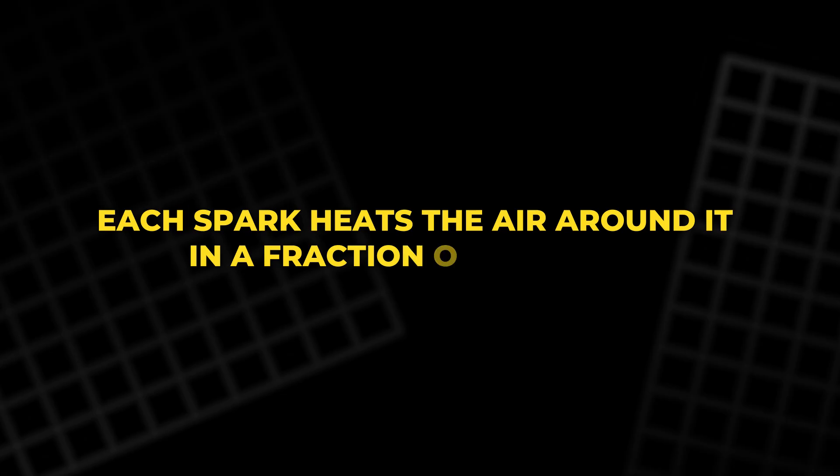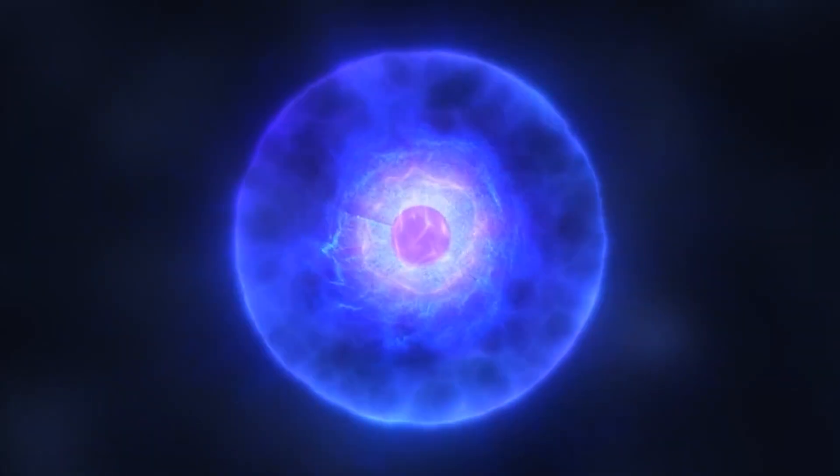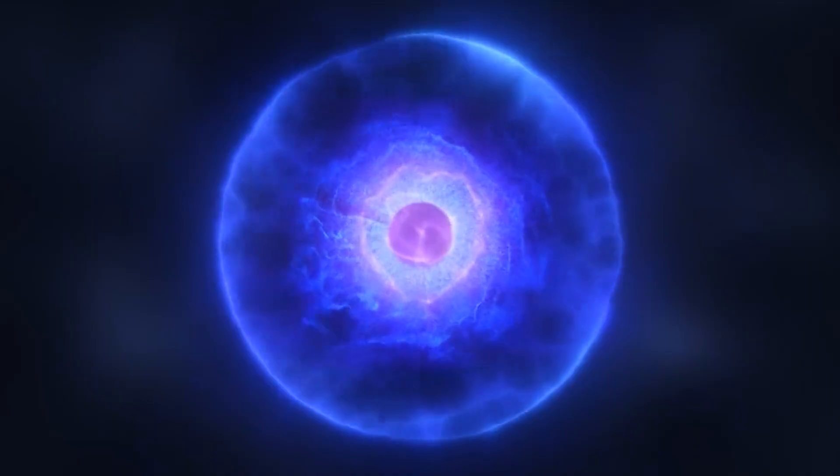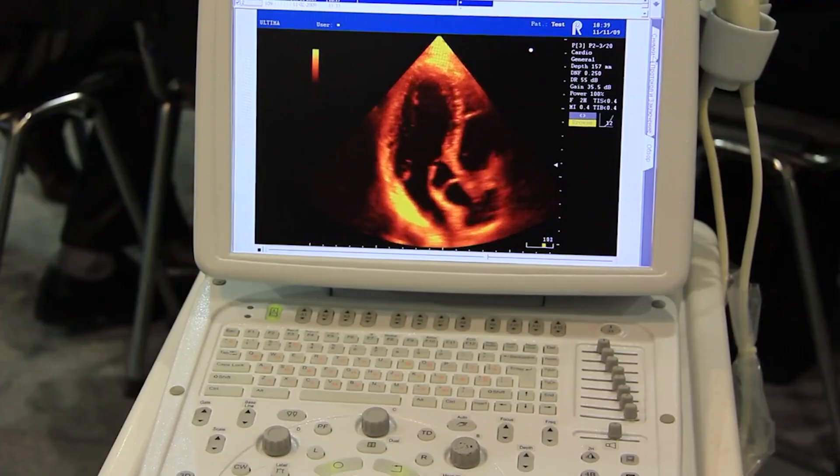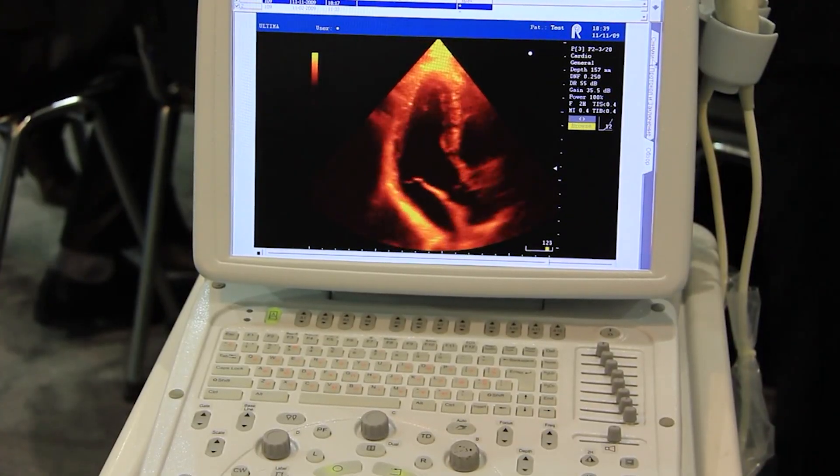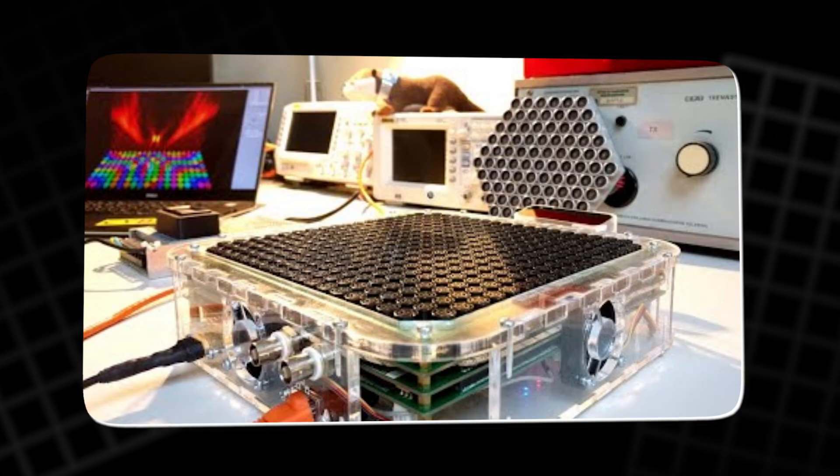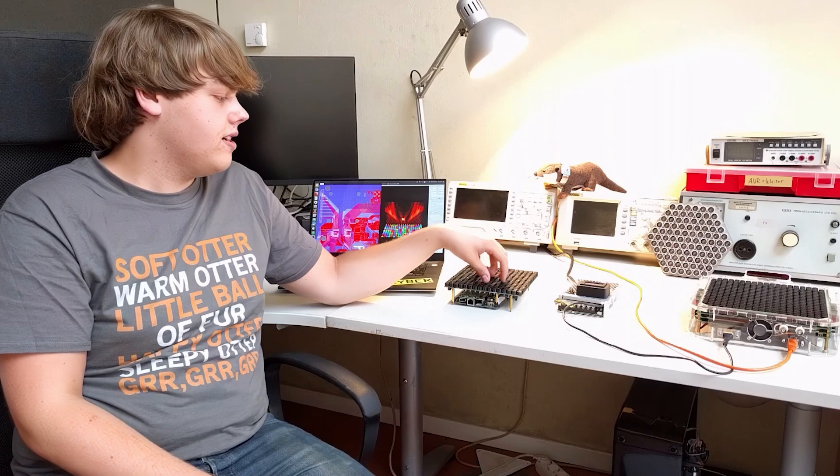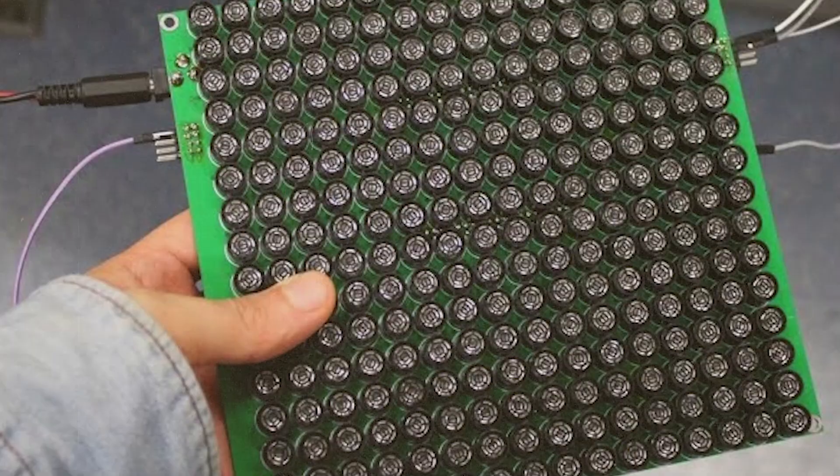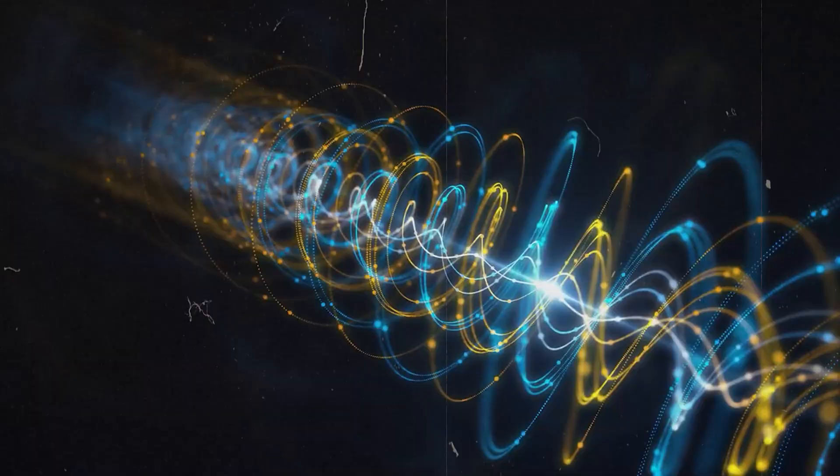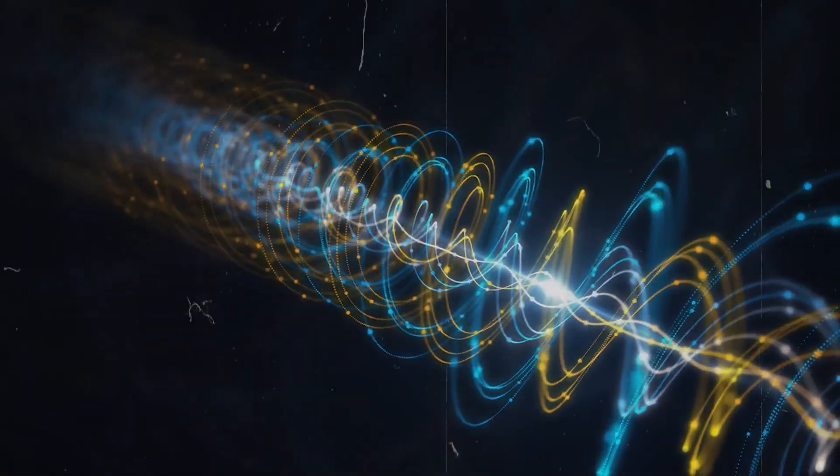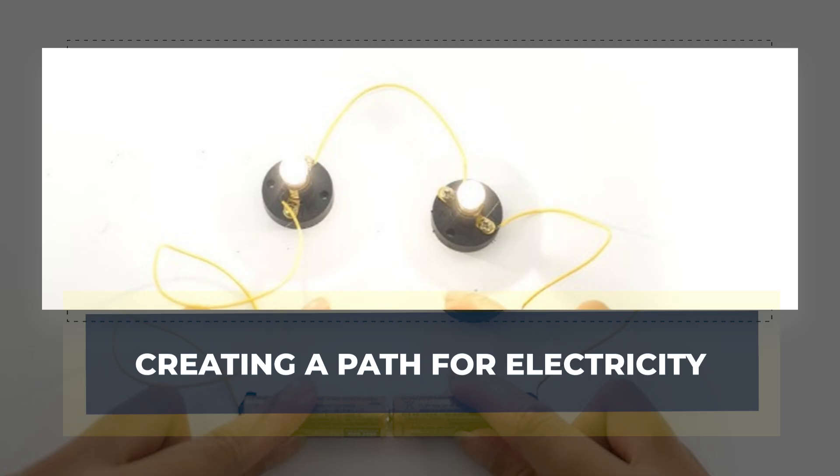Each spark heats the air around it in a fraction of a second. Normally that hot air rises and mixes randomly with cooler air, but if the spark occurs within a controlled standing wave, the ultrasonic pressure traps the hot air in specific regions. Researchers built a circular array of ultrasonic transducers that produced a strong standing wave pattern. The center of this ring became a stable antinode, a vertical column where hot air is guided upward. When plasma forms near this center, the ultrasonic wave pushes the hot air into a single straight channel, creating a path for electricity.